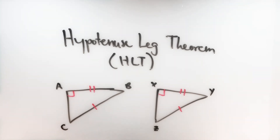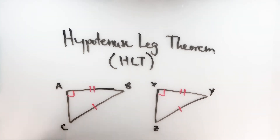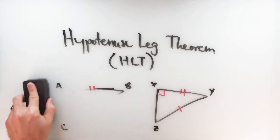When you're proving two triangles congruent by the hypotenuse leg theorem, your proof is going to look a little different compared to the other triangle congruence options we've used. The reason it's different is because the criteria is different. There are three statements that must be present in a proof using hypotenuse leg.